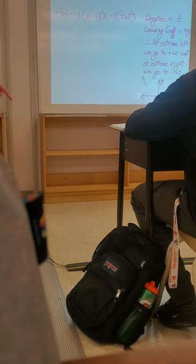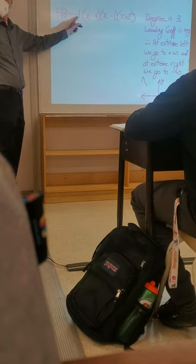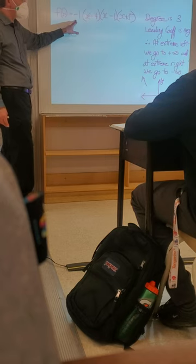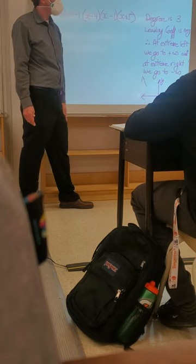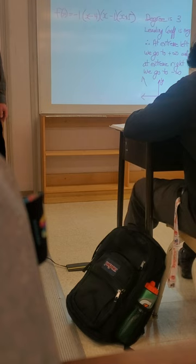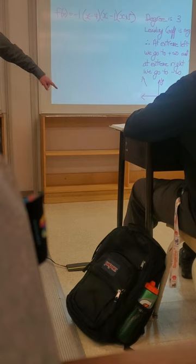And because it's x cubed, we've got a degree of 3. End behaviors for degree 3 are opposite directions — so it does this, or it does this. It all now depends on that leading coefficient, and there is that leading coefficient right there. If you multiply all this out, you would start with a negative x cubed. So because we have a leading coefficient that's negative, at the extreme left-hand side that's going to end up going up forever, and at the extreme right it's going to end up going down forever.